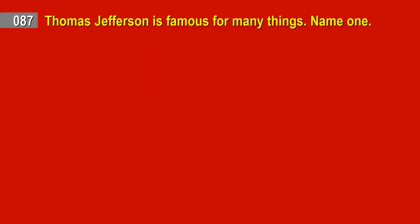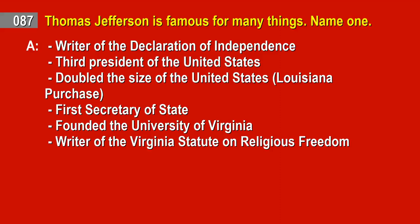Question 87. Thomas Jefferson is famous for many things. Name one. Answer: Writer of the Declaration of Independence. Third President of the United States. Doubled the size of the United States — Louisiana Purchase. First Secretary of State. Founded the University of Virginia. Writer of the Virginia Statute on Religious Freedom.